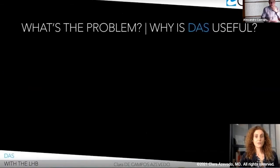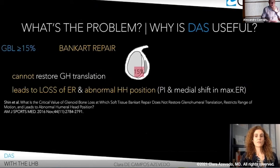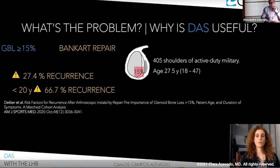So what's the problem? Why is DASH useful? In the landmark study by Shin and co-workers, they found that glenoid defects of 15% or more of the anteroposterior glenoid width should be considered the critical bone loss amount at which soft tissue Bankart repair cannot restore glenohumeral translation. Specifically, it restricts rotational range of motion regarding external rotation and leads to an abnormal humeral head position, particularly a posterior inferior medial shift in maximal external rotation. At a mean follow-up of 61 months, Decker and co-workers found that glenoid bone loss of 15% or more was an important risk factor for recurrence after soft tissue Bankart repair.